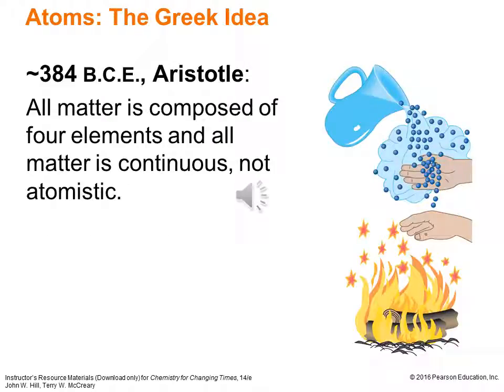If we go back to Ancient Greece, around 384 BCE, we have Aristotle — a very famous philosopher attributed with a lot of important ideas, especially concerning the natural sciences, mainly physics. But he did have some ideas that influenced chemistry, and unfortunately not for the better.